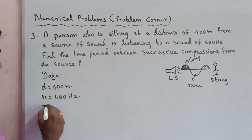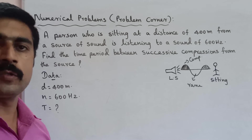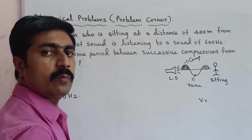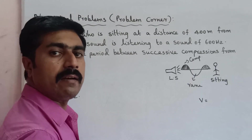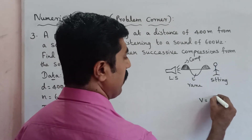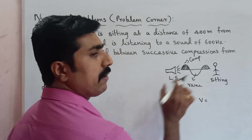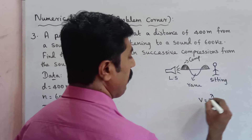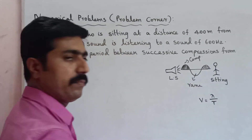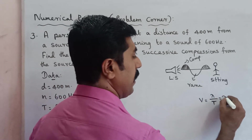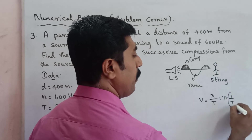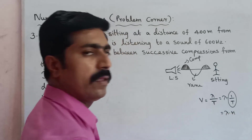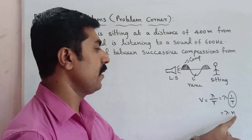Next, time period T. The definition: distance traveled by a sound wave per second is related to wavelength. Wavelength lambda, multiplied by frequency N, gives the wave speed. The reciprocal of the time period is frequency: lambda into N, so time period T relates to frequency N.